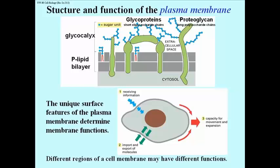Some proteins are required for movement and shape change — for example, a phagocyte will change its shape as it engulfs a bacterium in your bloodstream. And then there are proteins involved in either import or export of molecules, which you'd expect to find fairly evenly distributed around the cell membrane surface.